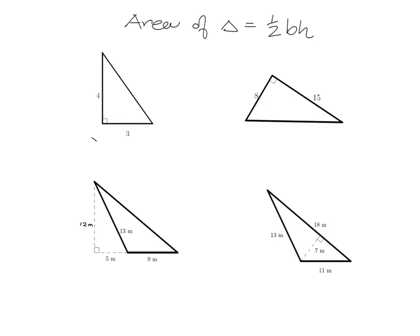Now let's find the area of a triangle. The area is half base times height, so we just need the base and the height. The base is the bottom of the triangle, and the height goes from the top corner straight down to the base. In this case the base is 3 and the height is 4, so the area is half times 4 times 3, which gives us 6.